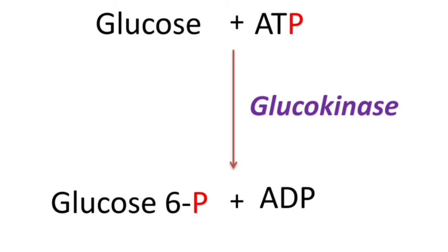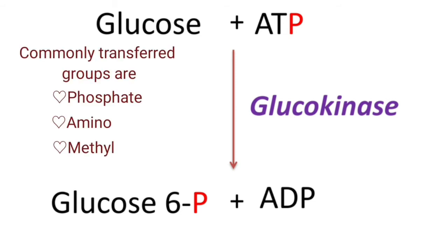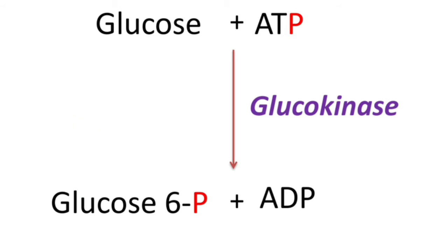An example of a transferase is glucokinase. This enzyme converts glucose to glucose 6-phosphate. In this reaction, one phosphate is transferred from ATP, so ATP is converted into ADP, and that phosphate is transferred to the 6th carbon of glucose. This is the example for transferase.